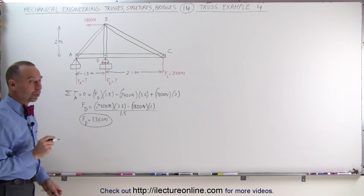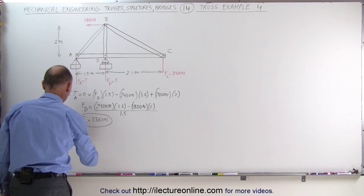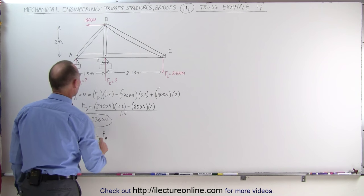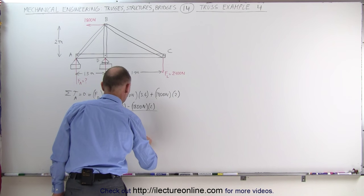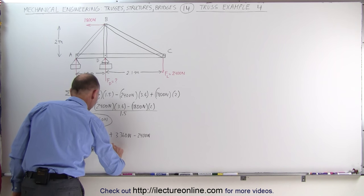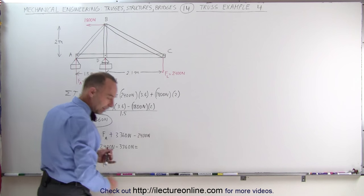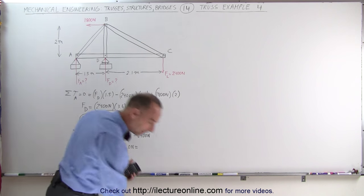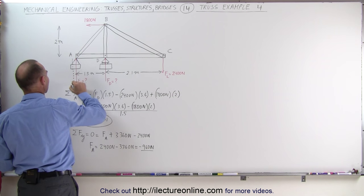Now we need to find F at A, the support force. The sum of the forces in the y direction adds up to zero. We have F sub A plus F sub D, which is 3,360 newtons, minus 2,400 newtons. So F sub A equals 2,400 newtons minus 3,360 newtons, which equals minus 960 newtons. F sub A is actually in a negative direction, and we'll get to that later.